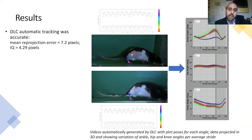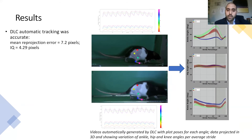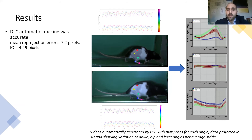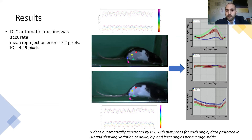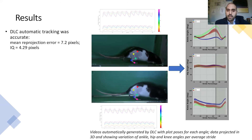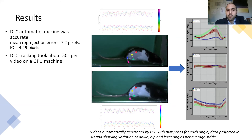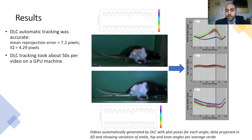To account for error, we took the 3D reprojected data and reprojected it into 2D. We found that the mean reprojected error was about 7.2 pixels, and the mean inter-quartile was 4.29 pixels, over 1,000 frames, which was very low. DeepLabCut took about 50 seconds per video on a GPU machine to be tracked.